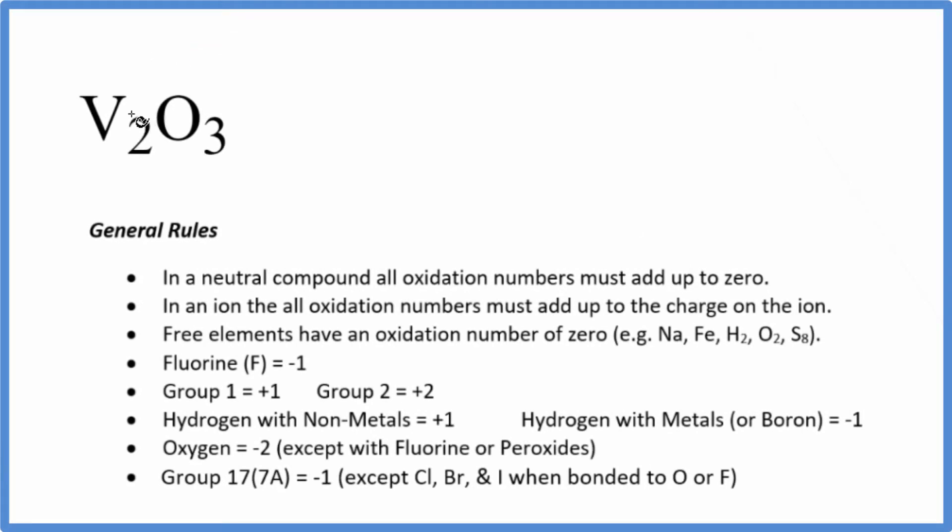In this video we'll find the oxidation numbers for V2O3. To do this we note that there's no negative or positive sign after the compound, so it's a neutral compound. All the oxidation numbers add up to zero.